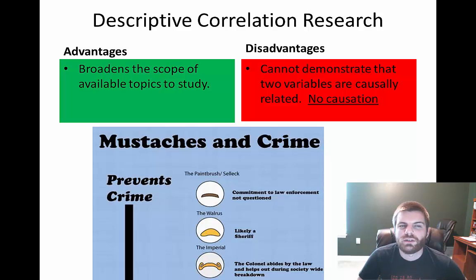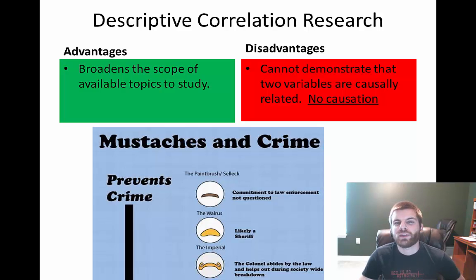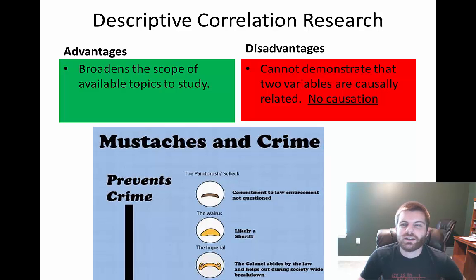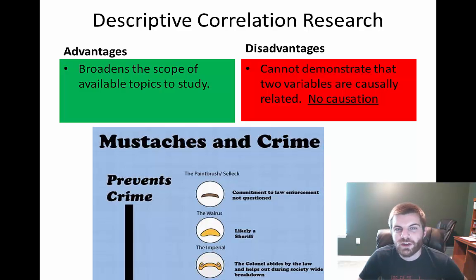Overall, evaluating the descriptive correlational style of research: the main advantage is that it allows you to study more topics, broadening the scope of things you can study. The major disadvantage is that you cannot demonstrate that two things are linked in a causational manner — there is no causation, all you can say is that two things may be related. One may be related to the other, but one does not cause the other.